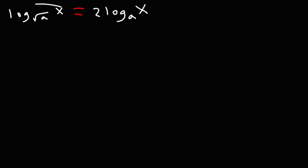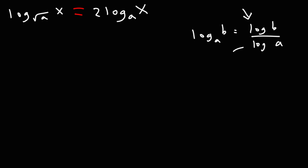The first thing I'm going to do is use the change of base formula. Just to recap, here's the change of base formula: log base a of b is equal to log b over log a. Notice that the new logs on the right side don't have a base, so we could introduce a new base — this could be base c. c could be anything: it could be 5, 8, 10, or e. Or if you don't put anything, it's assumed to be 10.